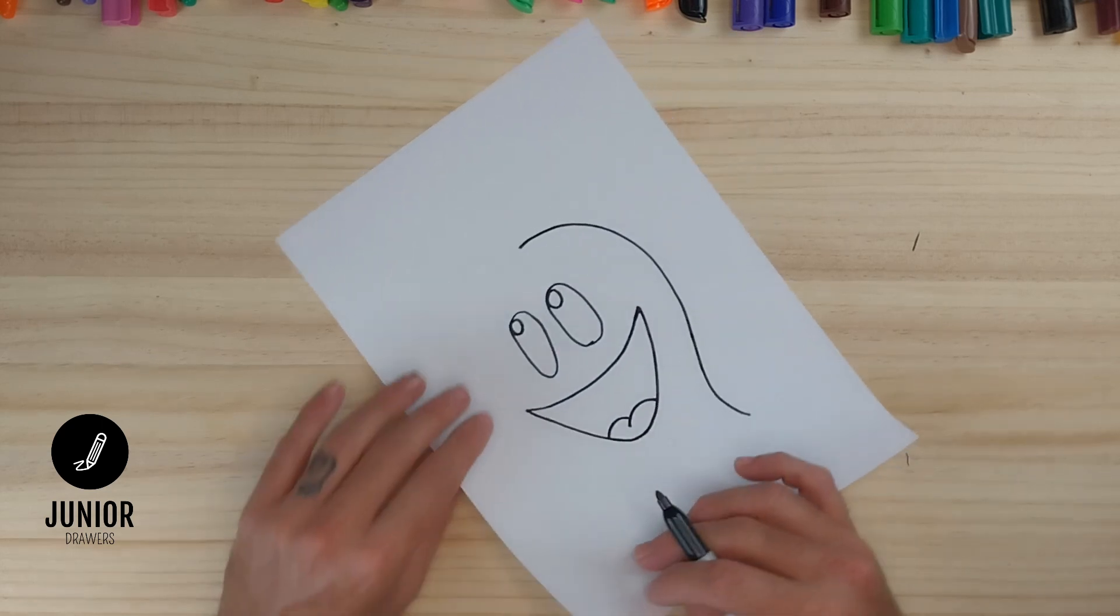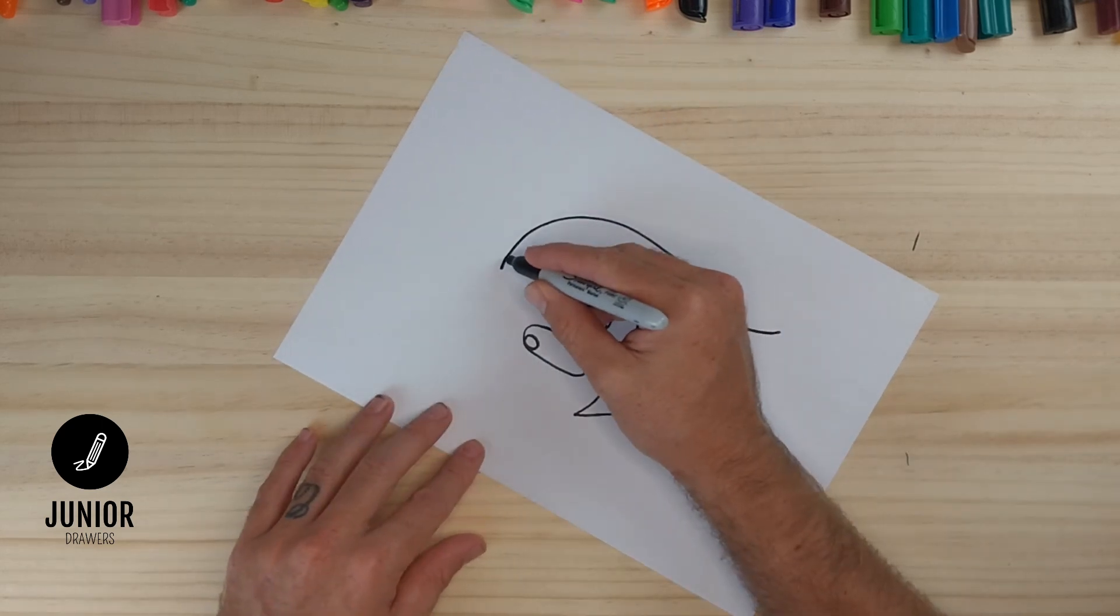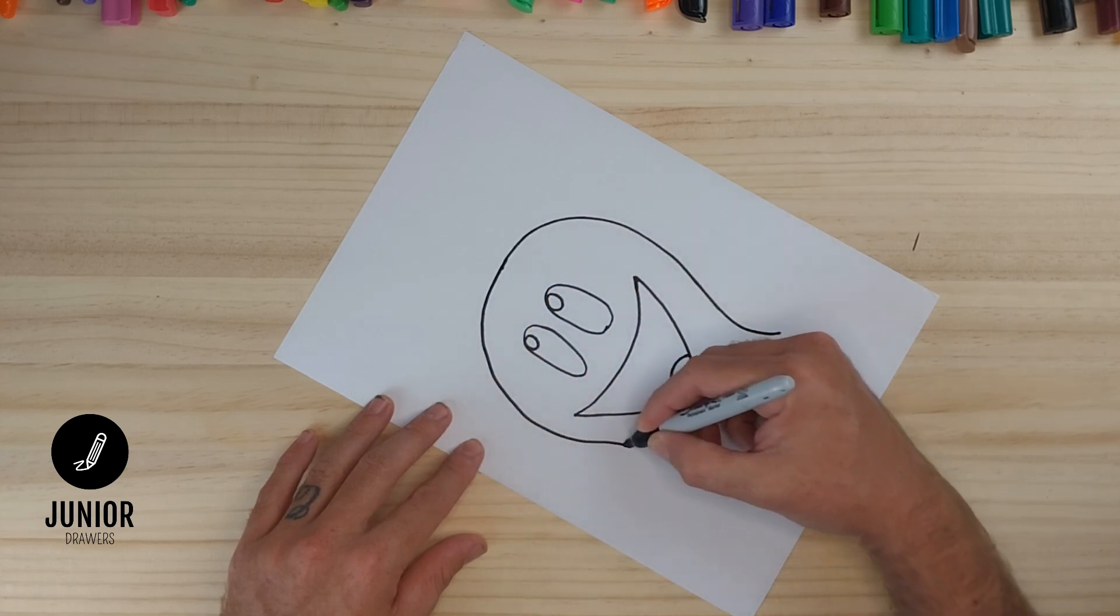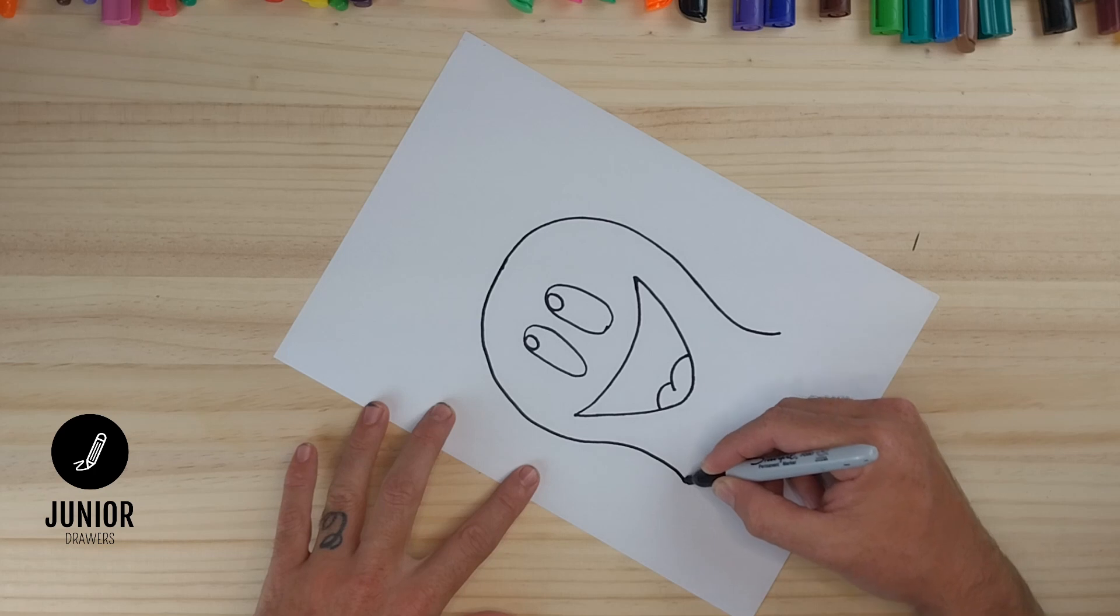Now we'll continue that line on the other side. So curved line and we'll flick it out at the bottom.